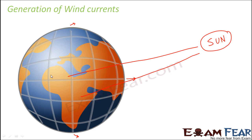Whichever part receives more sunlight will get more heated up, because sunlight not only provides light but also provides heat. So the equatorial region receives more heat, and therefore the air present in this region will get heated up. The air expands when heated, becomes lighter, and tends to move up.